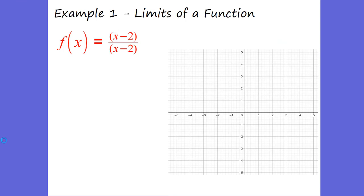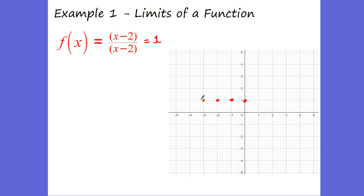Let me give you two mathematical examples of limits. Here we have the function f(x) equals (x minus 2) over (x minus 2). All of you would say that function equals 1 because the numerator cancels with the denominator. That's true — the function is going to equal 1, which means your y value equals 1 for every single point. If you put 0 in for x: negative 2 over negative 2 is 1. If you put negative 1: negative 3 over negative 3 is 1. You get 1 at every single spot.